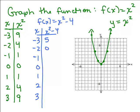So that'll be 5, 0, 1 minus 4 is negative 3, 0 minus 4 is negative 4, 1 minus 4 is negative 3, 4 minus 4 is 0, and 9 minus 4 is 5. So I get these ordered pairs. Let's plot those. I've got negative 3, 5, it's up here. I've got negative 2, 0, that's right here. Negative 1, negative 3 is right there. 0, negative 4. 1, negative 3. 2, 0. And we've got 3, 5.